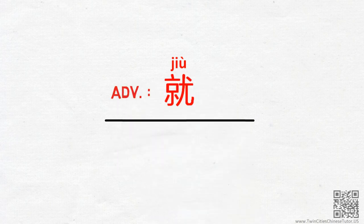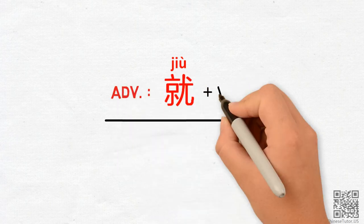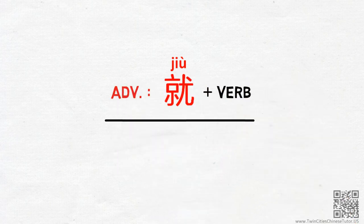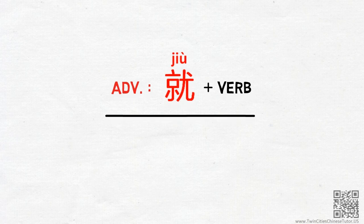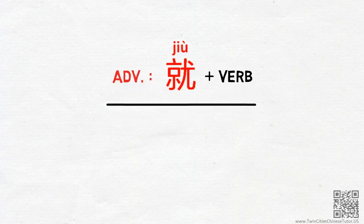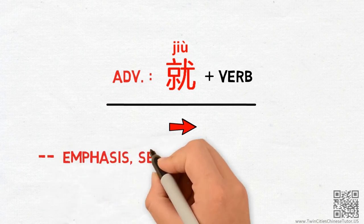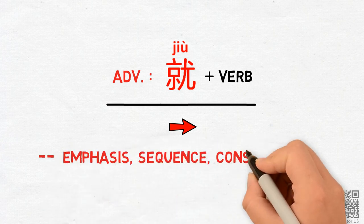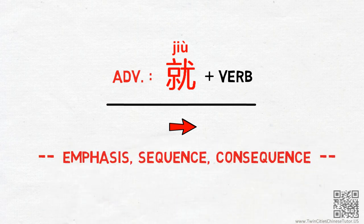As an adverb, jiu usually appears right before the verbs. Most of the time, for the adverb jiu, instead of thinking of it as a word, think of it as a symbol — and more precisely, an arrow — that indicates emphasis, sequence, or consequence. Here's what I mean.